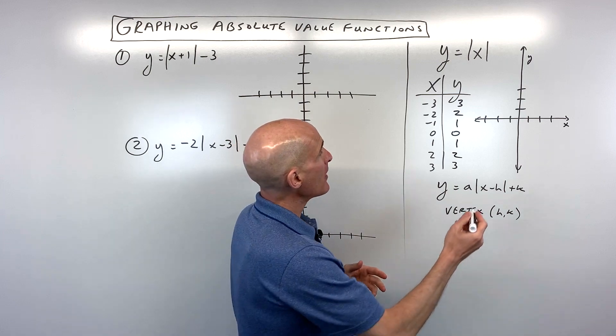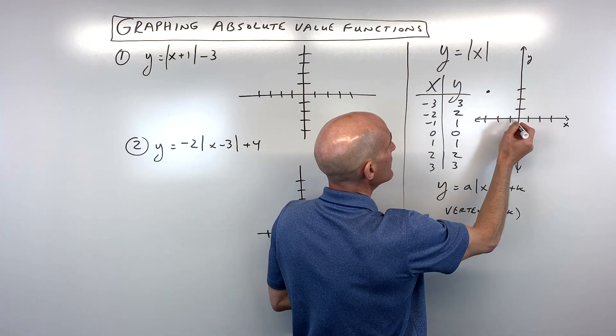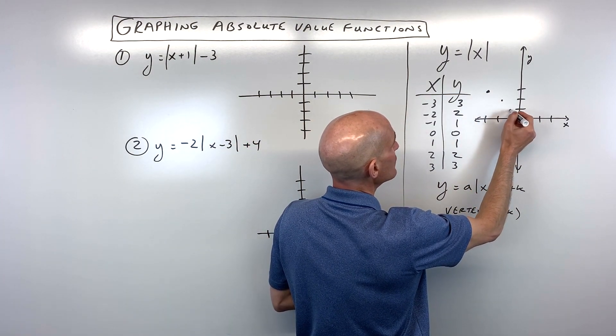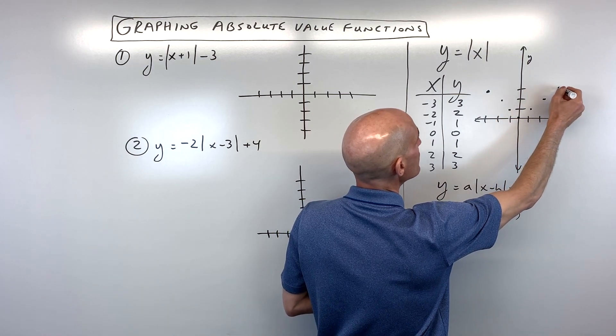So if we plot these points, we're going to get negative three, three, negative two, two, negative one, one, zero, zero, one, one, two, two, three, three.